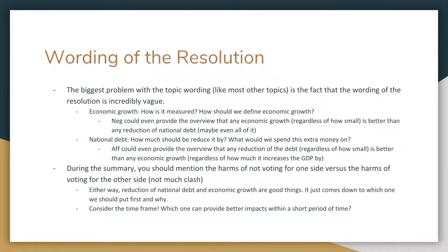Let's start off with the wording of the resolution. The biggest problem with this topic, like most topics, is that the wording is very vague. Number one, there are two different metrics for how economic growth is measured or defined. Similarly, what exactly constitutes the national debt is also unclear. For the NEG side, you really have to specify exactly how economic growth is measured — whether it's an increase in per capita GDP or just GDP in general.